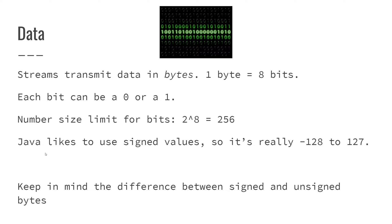Streams transmit data in bytes — that's how we're going to be reading data. One thing to keep in mind is that Java likes to use signed values, meaning a negative and a positive, like an integer. So in Java, one byte is actually negative 128 to 127, because it's splitting the 256 value in half to account for negative values. Whenever you want to find the signed value of a byte or bigger number, you just split in half. Java mostly uses unsigned byte values — 0 through 255 — but sometimes uses negative 128 to 127. For example, if you make an actual byte variable, that's going to be negative 128 to 127.